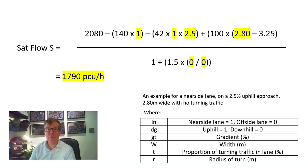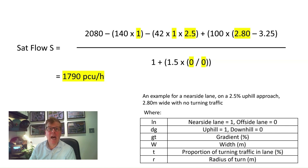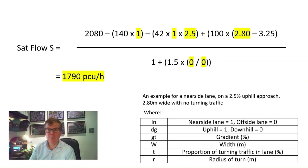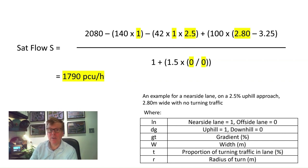The second example is for a nearside lane on a 2.5% uphill approach, 2.8 metres wide with no turning traffic. Here we include 1 for a nearside lane and 1 for an uphill approach with a 2.5% gradient, and a lane width of 2.8 metres. This shows the reduction from 2,080 PCUs per hour to 1,790 PCUs per hour, demonstrating how geometric constraints and features of a lane impact the sat flow value.